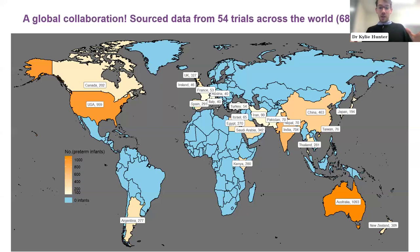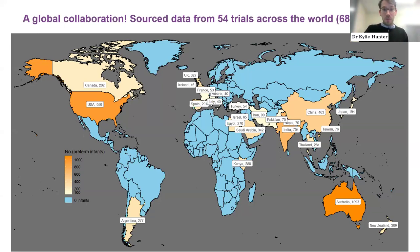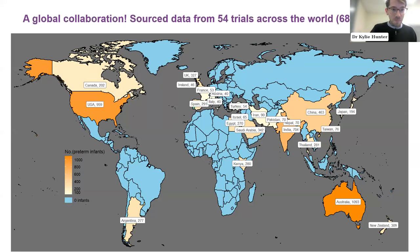The ICOM project — Individual participant data on Cord Management at preterm birth — aimed to compare and evaluate effective cord management strategies and identify if strategies were more or less effective for subgroups. The added value of IPD included unreported data from trial registries, data integrity examination, harmonised outcomes across studies, and more precise complex analyses — adjusting for prognostic factors such as gestational age, adjusting for clustering of twin outcome data, and examining effect modifiers without ecological bias. We sourced data from 54 trials across the world in a global collaboration.